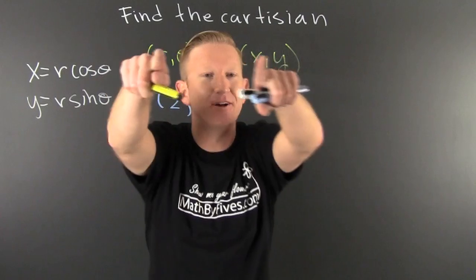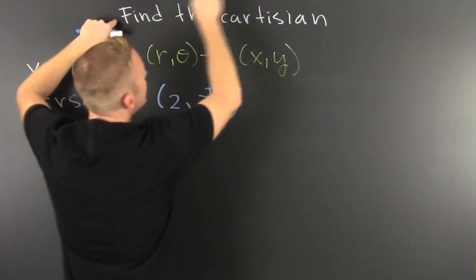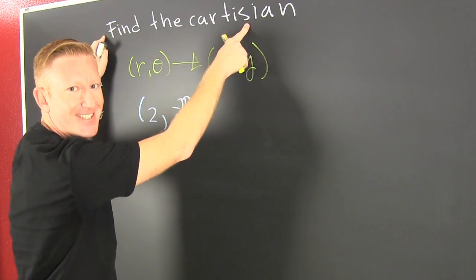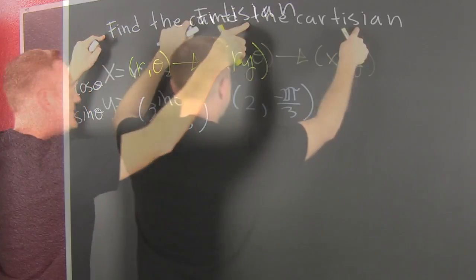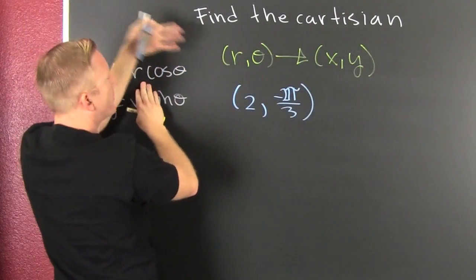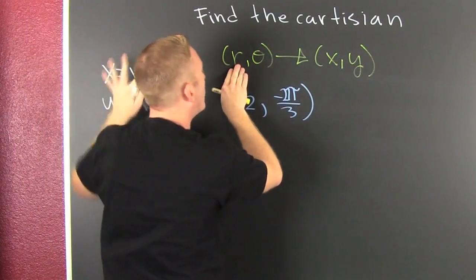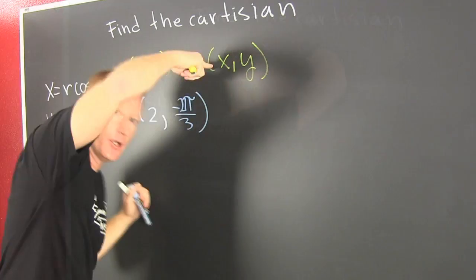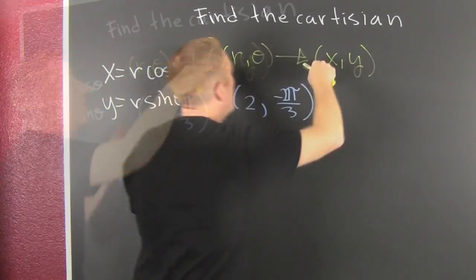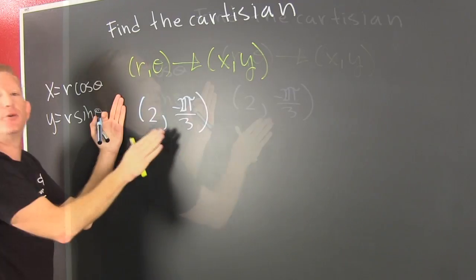Switch from polar to rectangular. What am I talking about? I'm saying find the Cartesian. Find the Cartesian when they give you the polar. They give you r, theta. They want you to find x, y.